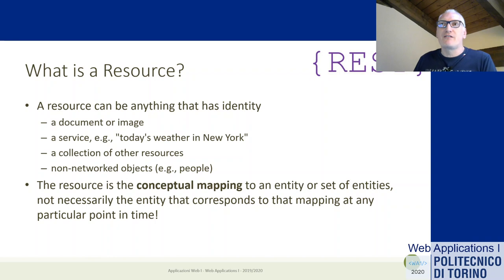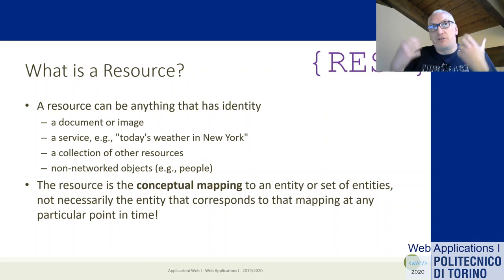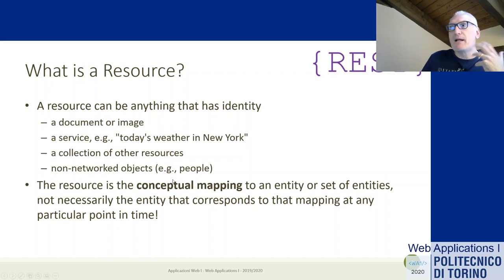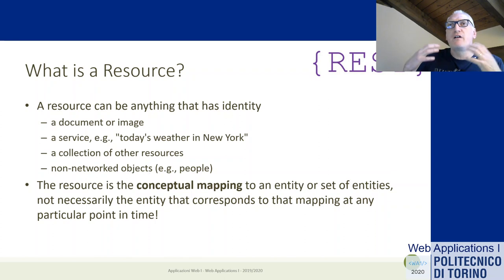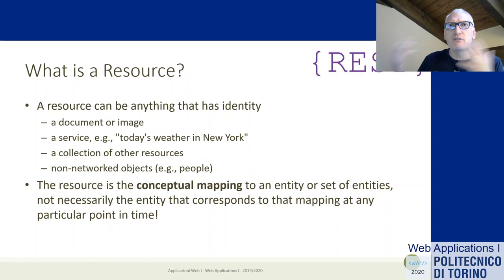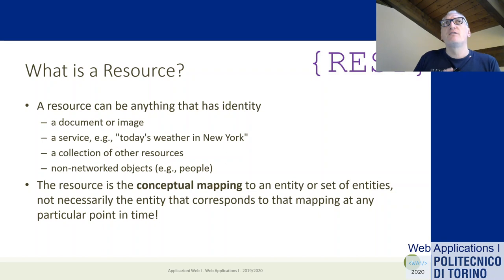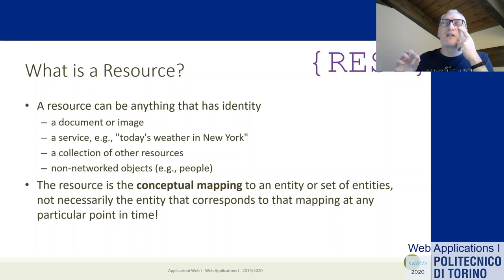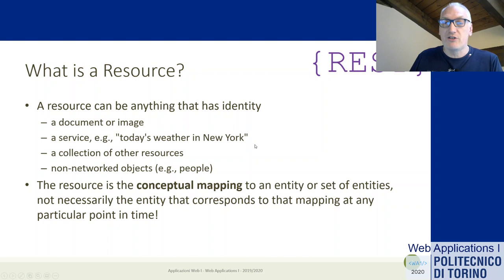We can also think about resources that are not really computer objects — a real person can be a resource because the system will represent metadata about that person. We should abstract from the data we have to a more general concept of a resource, similar to how we think in terms of abstract entities in entity-relationship models. We try to identify which are the main resources that our client and server applications need to share.